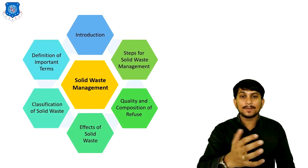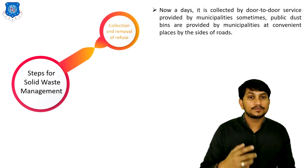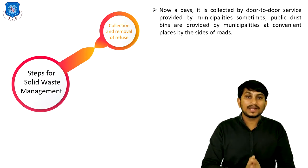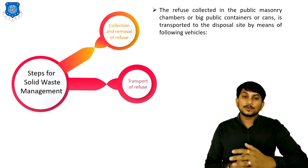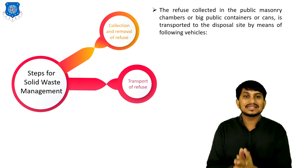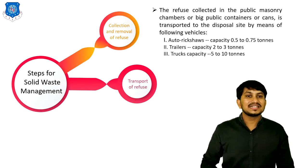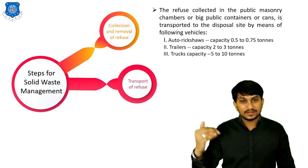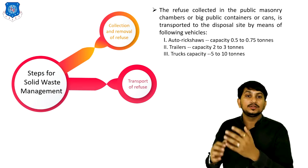Now let's discuss various steps for solid waste management. The first step is collection and removal of refuse. Nowadays it is collected by door-to-door services provided by municipal corporations. Sometimes, public dustbins are provided by municipal corporations at convenient places. The second step is transportation. The refuse collected in public masonry chambers or big public containers is transported to the disposal site by motorized vehicles having capacity of 0.5 to 0.75 tons, trailers having capacity of 2 to 3 tons, and trucks having capacity of 5 to 10 tons. Usually in various cities, trucks are used for transportation of refuse to the disposal site.